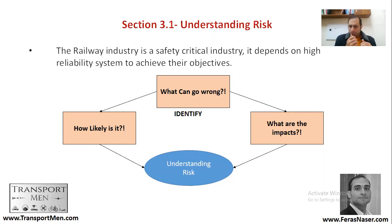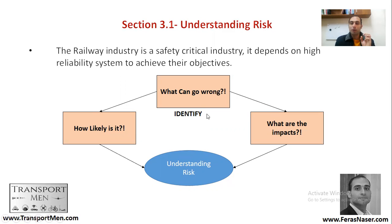The railway industry is a safety-critical industry, highly dependent on safety. In order to ensure a reliable safety management system, you need to understand risk. You always need to think about what can go wrong: Can we have a train collision? A control system failure? A passenger tripping onto the track? A suicide case? Or a ticket barrier system not working and blocking passenger flows? We need to identify all of these.